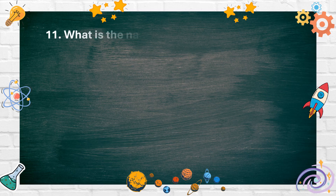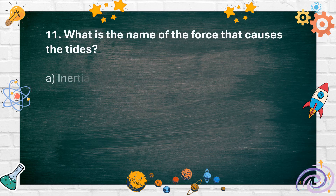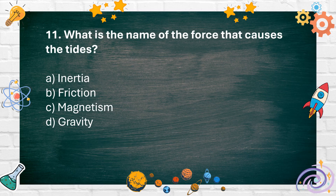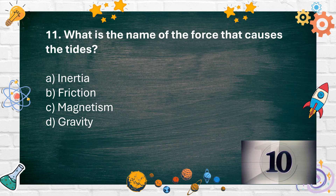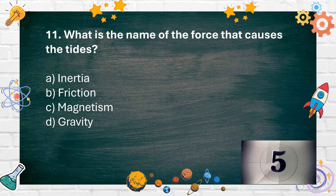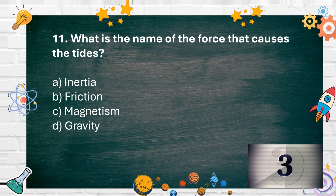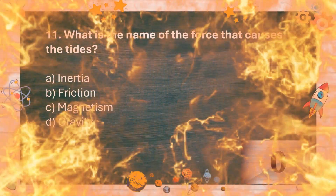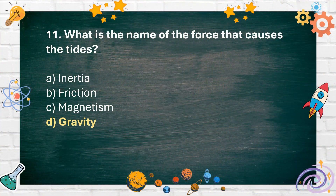Number 11. What is the name of the force that causes the tides? A. Inertia, B. Friction, C. Magnetism, D. Gravity. The answer is D. Gravity.